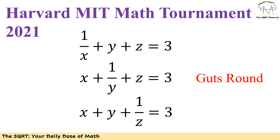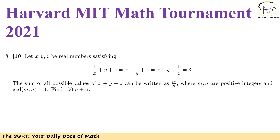Let's see what the problem is first, and then we are going to deep dive into the solution. We have real numbers x, y, and z, and we have three equations. We have 1 over x plus y plus z, we have x plus 1 over y plus z,